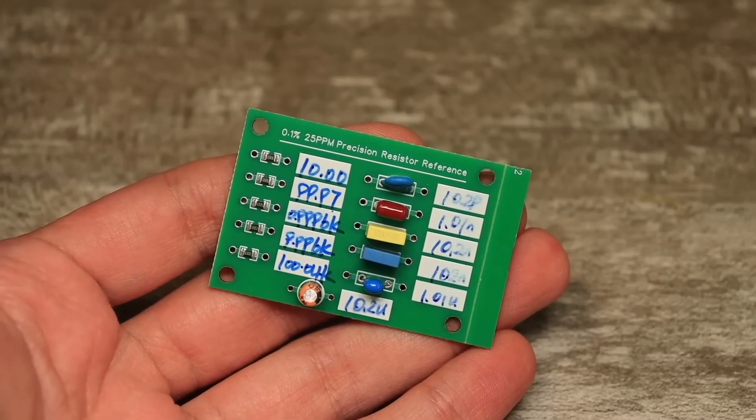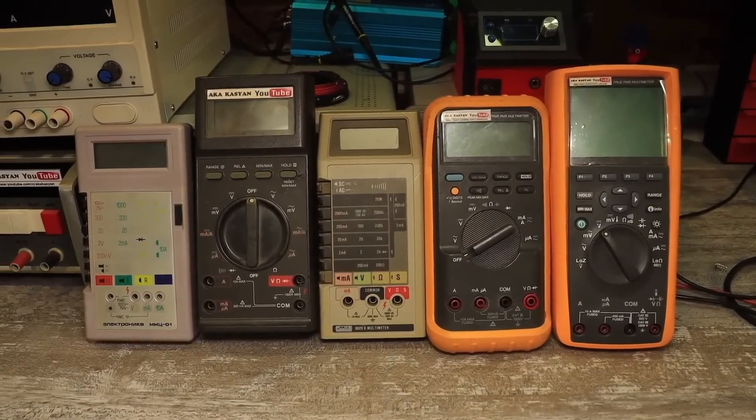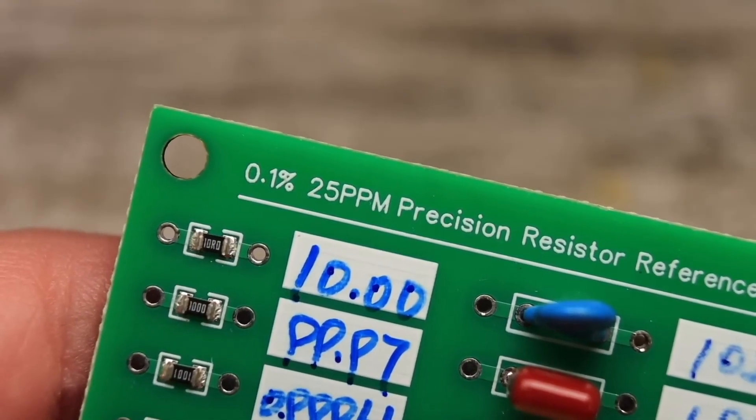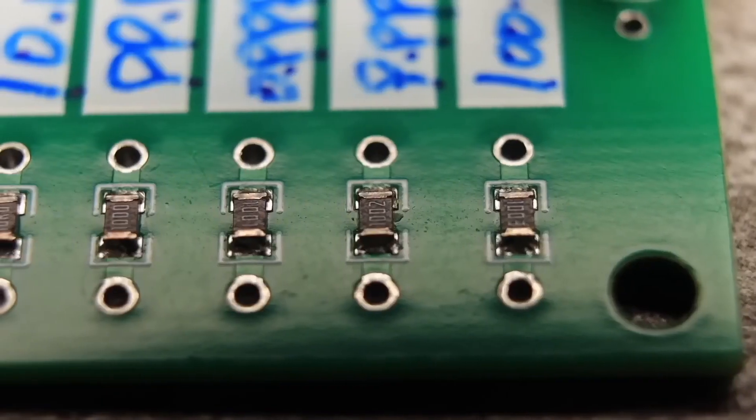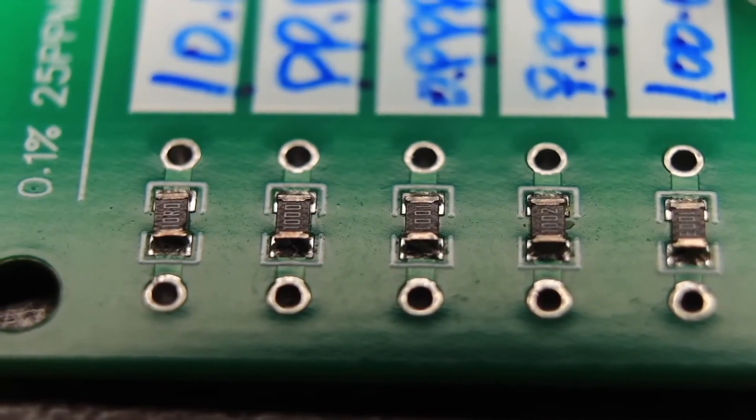The board you see in front of you right now can be useful for checking the accuracy of budget multimeters. It has precision resistors on board with a tolerance of 0.1% and a TCR of 25 ppm. The resistors are different: 10 ohms, 100 ohms, 1 kiloohm, 10 kiloohms, and 100 kiloohms.